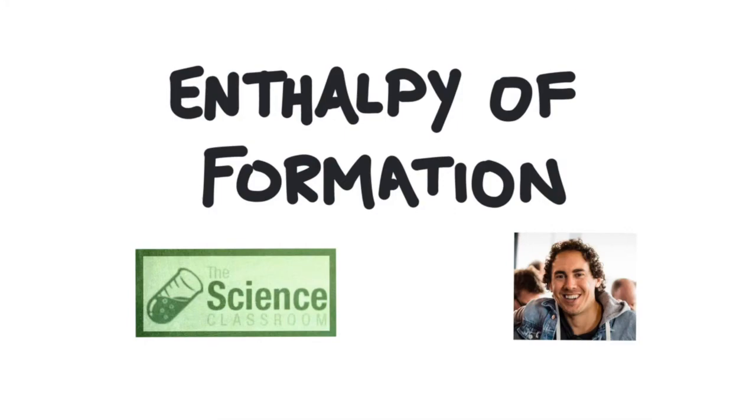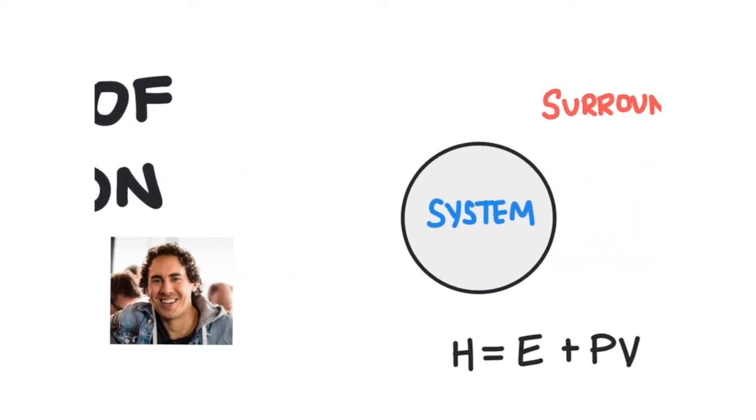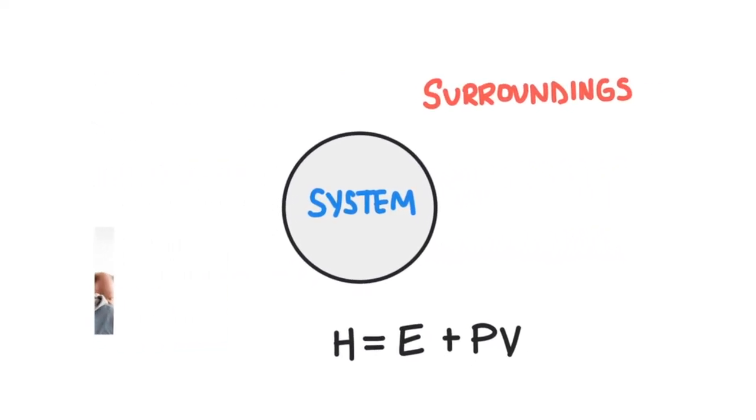In this video we're going to talk about enthalpy of formation. Enthalpy is kind of a weird property of matter, but it's really important in chemistry when we talk about chemical reactions. Specifically, enthalpy is how we describe the energy change of a system during a chemical reaction.